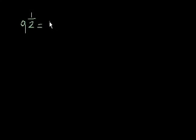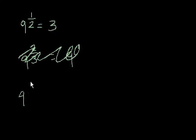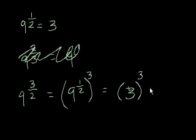We know that 9 to the 1 half is equal to 3. What do you think 9 to the 3 halves is equivalent to? Well, this is the same thing as 9 to the 1 half power, to the third power. When you have one exponent to another exponent, you multiply the two — that's where you get 3 halves. But 9 to the 1 half we know is 3, and raising that to the third power gives us 27.